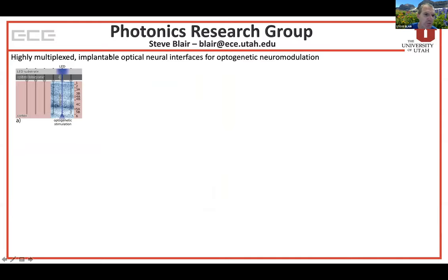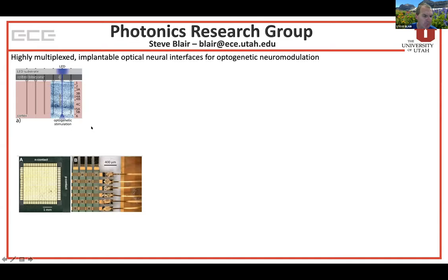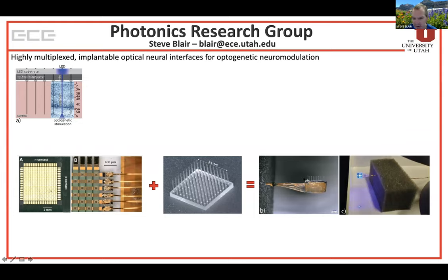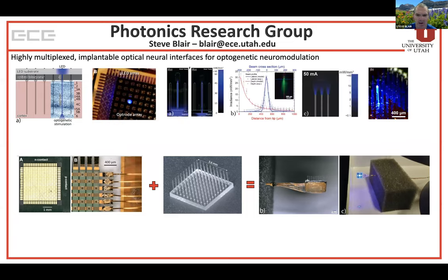To quickly run through the neural interface work: the idea is that we can use implanted optical waveguides to deliver light millimeters into tissue, which is beyond the typical attenuation depth largely due to scattering of light in tissue. We do that by making miniaturized indium gallium nitride LED displays. This shows a close-up of a display coupled to an array of optical waveguides to produce a packaged device. We can then spatially and temporally modulate the light pattern produced by that device, carefully engineering the light projection properties from each waveguide to project the proper distance in tissue with the proper intensity.